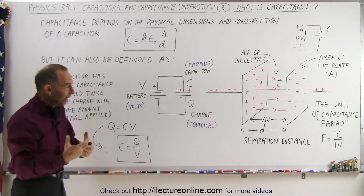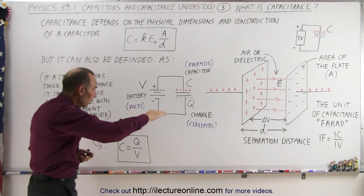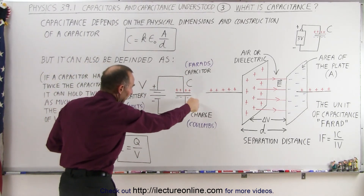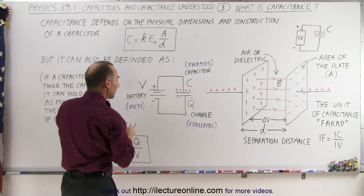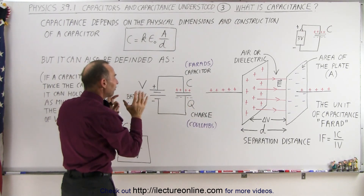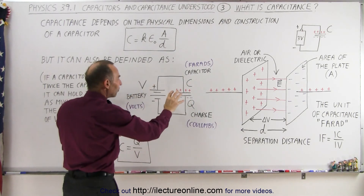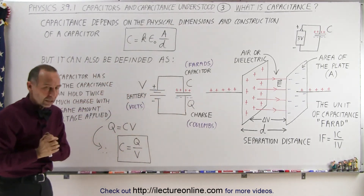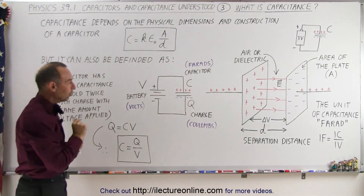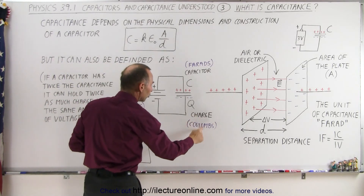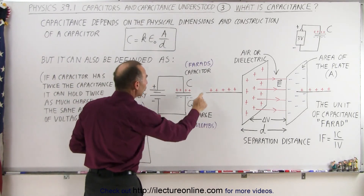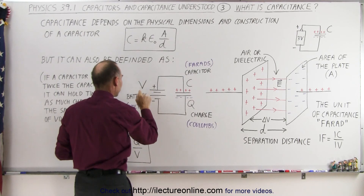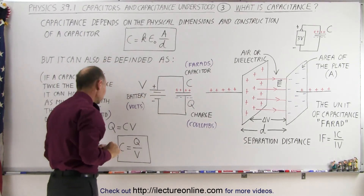When we have everything connected for a while, the battery will push charges onto the capacitor, indicated by the letter Q for charge. And now we can define capacitance of this capacitor in terms of this construction right here. Notice that the unit for charge is coulombs, the unit for capacitance is farads, and the unit for the battery voltage is volts.